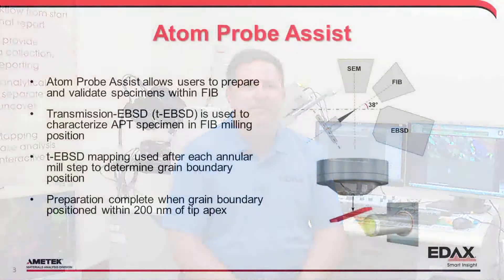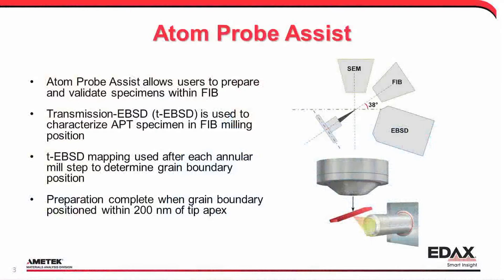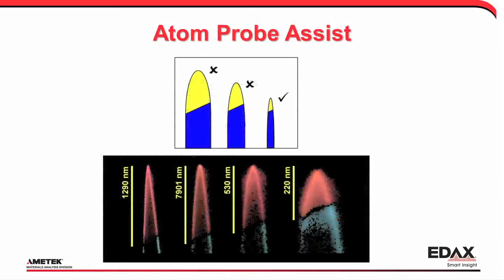Once selected, a FIB instrument is used to prepare a site-specific sample and the tip sharpened using repeated annular milling steps. Atom Probe Assist is used between each milling step to detect the grain boundary position. Once the boundary is within 200 nanometers of the specimen tip, preparation is complete.